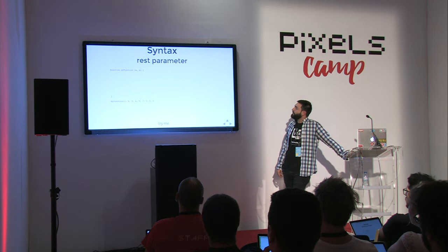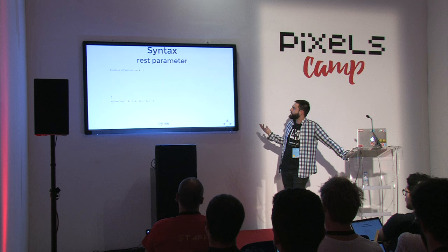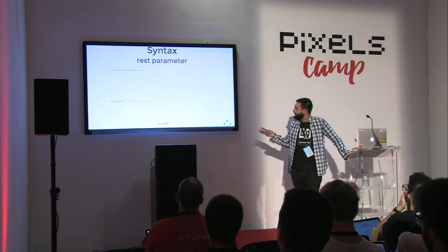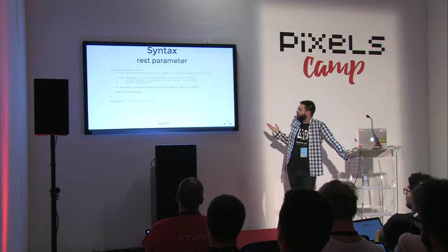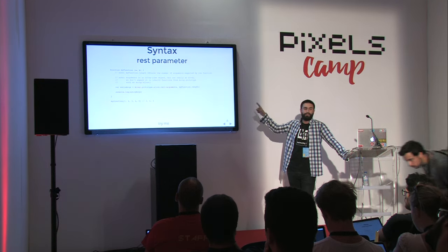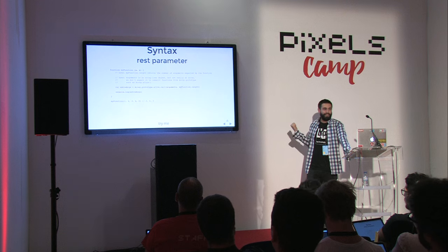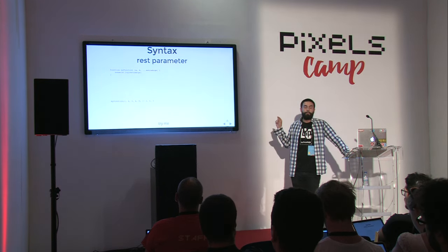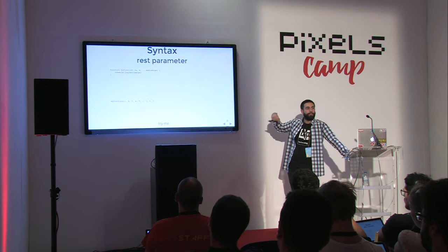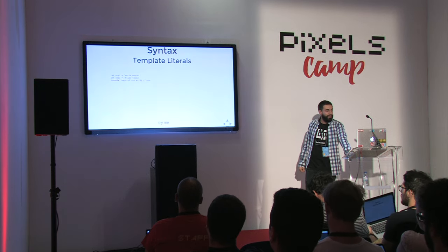The rest parameter is also a very nice addition. Imagine a function that takes two parameters but is called with five. To access those three extra parameters in ES5, you had to do some code gymnastics using the `arguments` object — which isn't really an array — and manually slice it. ES6 simplifies this: you declare the last variable with the three-dots notation and it becomes the rest of the parameters passed to that function, arriving as a proper array.